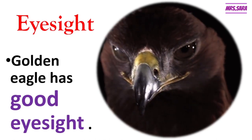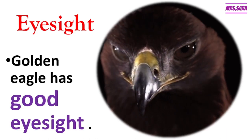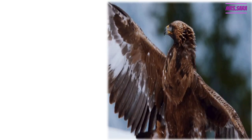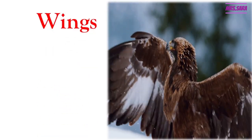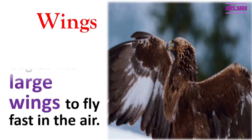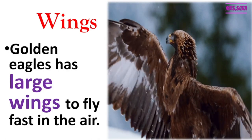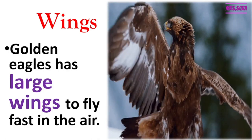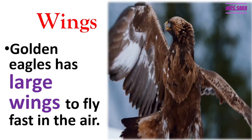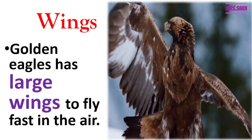The golden eagle has good eyesight and can see well to catch its prey. Super, clap for yourself! Second, the golden eagle has wings. Like any bird, the golden eagle has wings to fly, but the golden eagle has large wings to fly fast in the air to catch its prey.